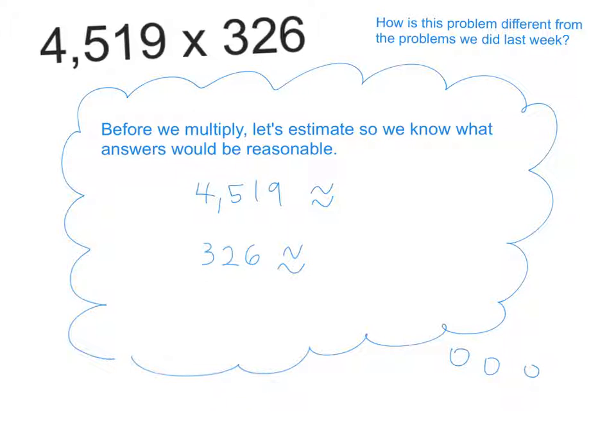But before we multiply, let's estimate the factors so that we have a general idea of what zone our answer should be in. We know that the first factor, 4,519, is pretty close to what number? Like if I wanted to round it to the nearest thousands, what would it be? Aditya? Yeah, that's pretty close to 5,000.